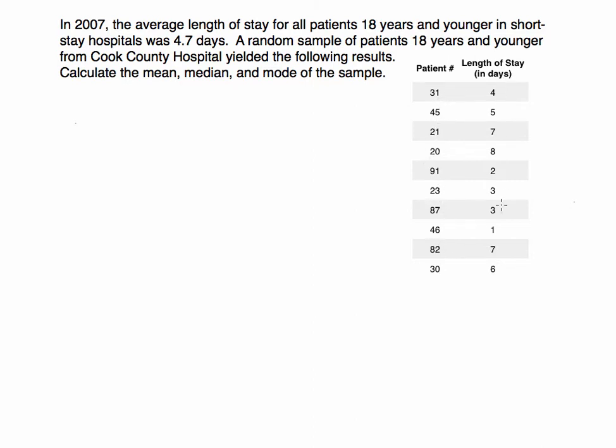On the right side, that is the length of stay for that patient. Before we calculate the mean, the median, and the mode, we want to make sure that we read the problem and make sure it's not already given to us. If you look back up here, it says that the average length of stay for all patients in short-stay hospitals was 4.7.